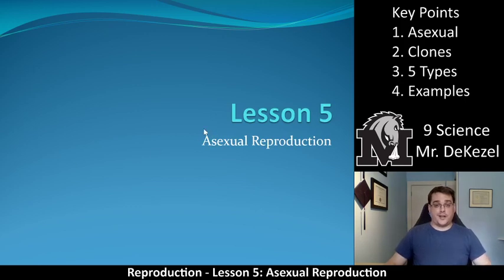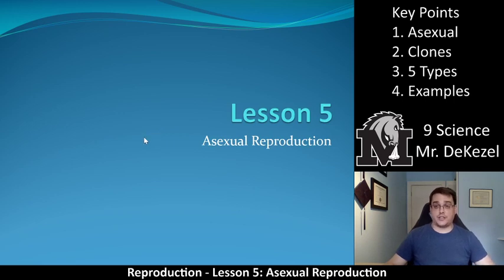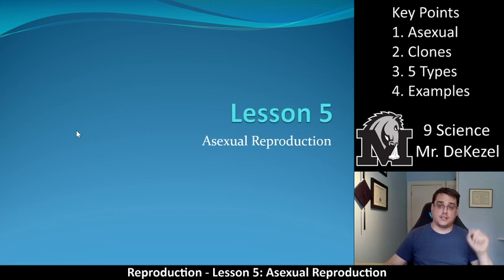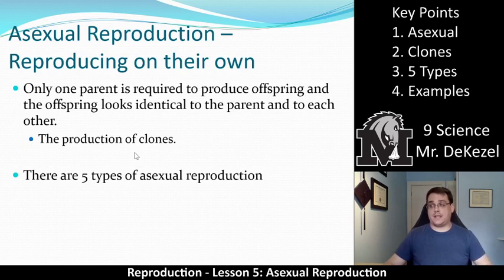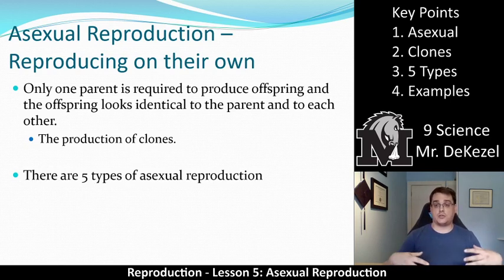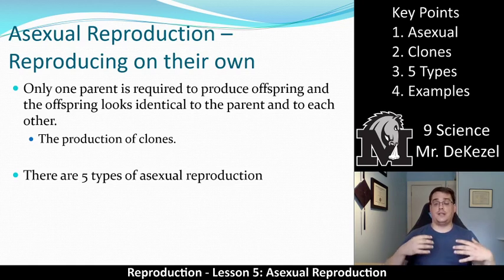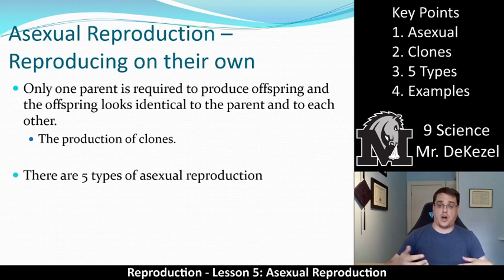Hello everyone, welcome to lesson 5. This one is titled Asexual Reproduction. Asexual reproduction means reproducing on their own — asexual is by itself — so in this case only one parent is required to produce offspring.